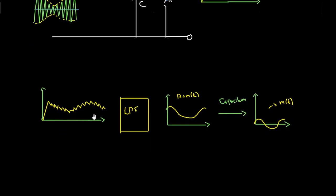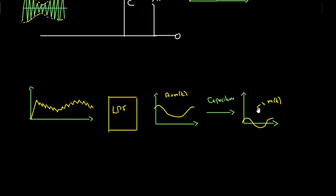After using the low pass filter, the ripples in the output waveform are removed, and we have the output waveform of the form A plus m(t). Since we need only the signal m(t), we use a DC blocking capacitor to block the DC component A. After using the DC blocking capacitor we get the message signal m(t).